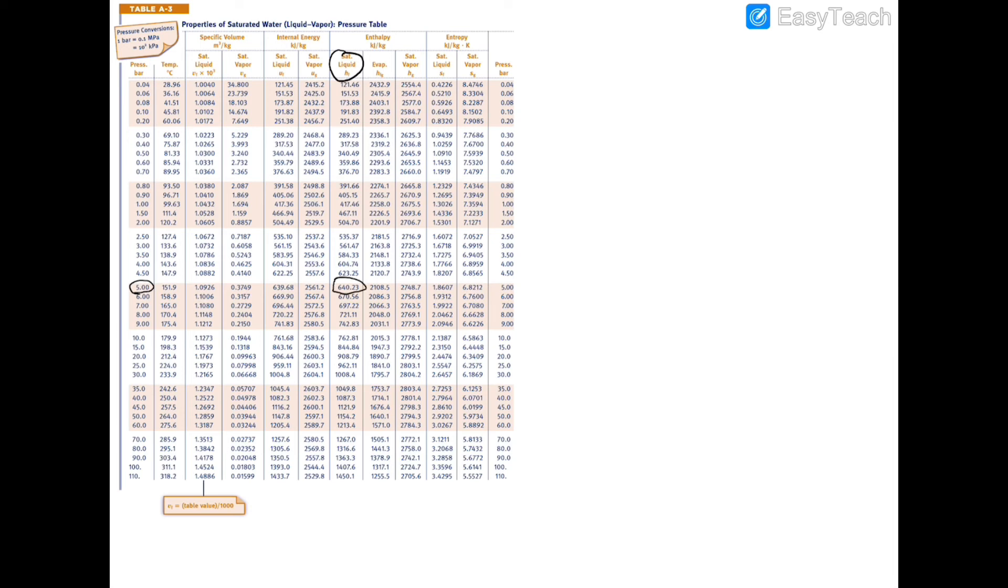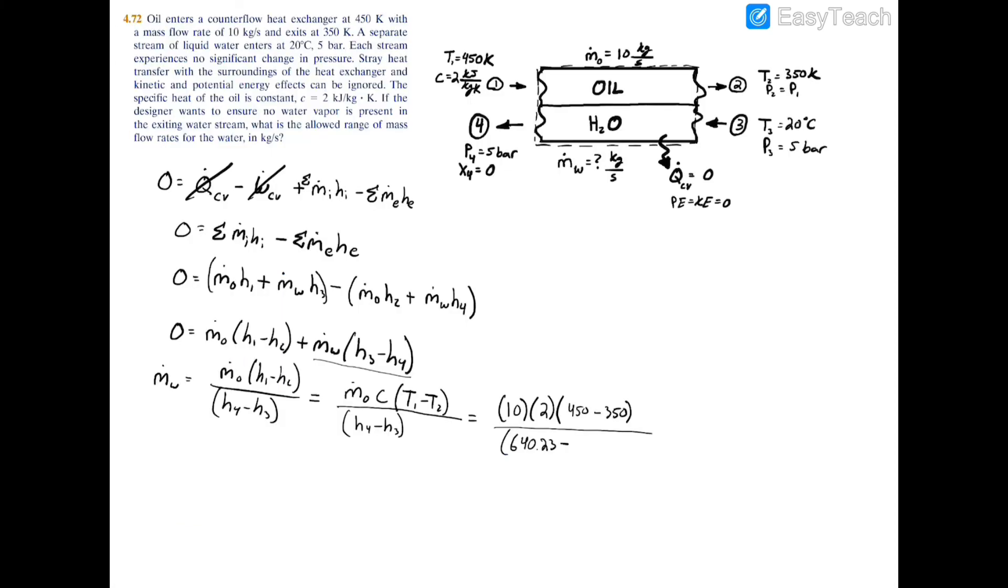this column right over here, and they line up here at 640.23 kilojoules per kilogram. And now we have to subtract h3.